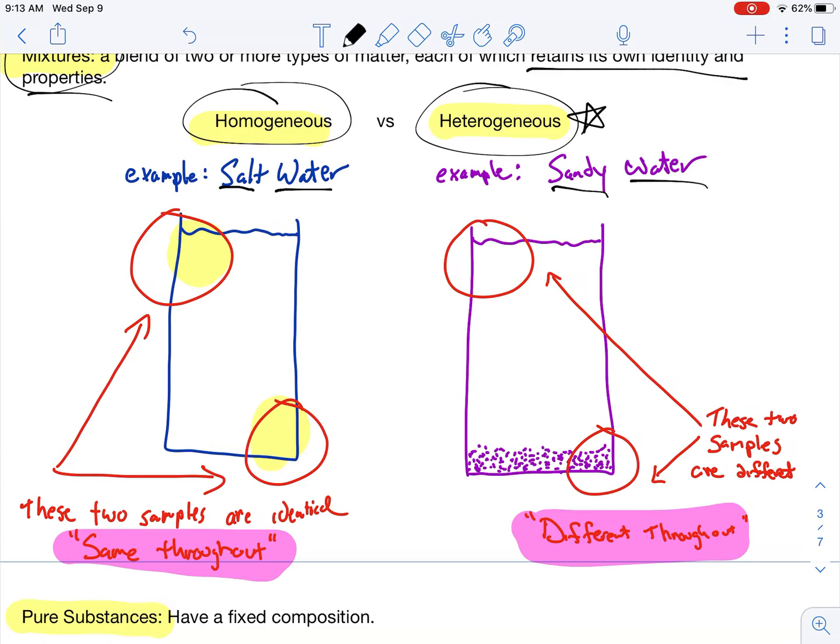For heterogeneous, that would be like sandy water. The sand and the water is not chemically combined, so it fits the definition of mixture. But if I took a sample up top here and a sample down bottom here, the bottom sample would have a lot of water and sand, and the top sample would have only water. So, the fact that they are different makes that a heterogeneous mixture.